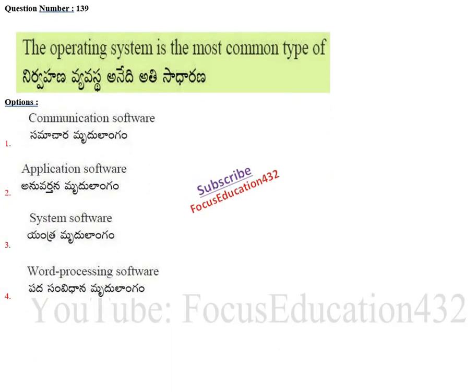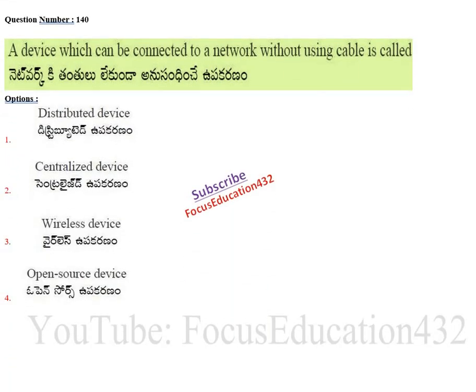Next question: what is the most common type of operating system? We know systems like Windows, Unix, and Android for mobile phones. The operating system manages the hardware — the memory, hard disk, CPU, and all resources. It is not communication software or application software; it is an example of system software. The operating system is the most important software in computers or mobile phones.